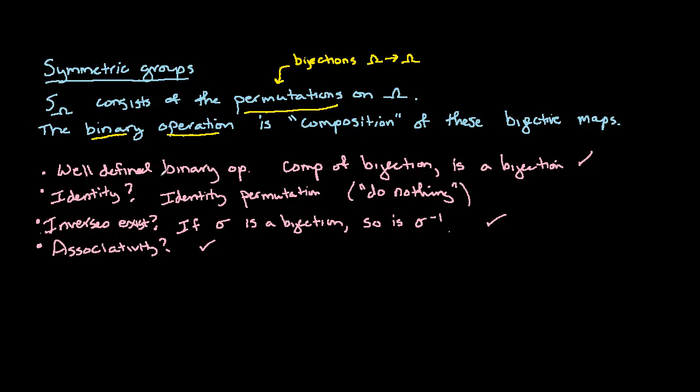Let's take a look at two elements. It will be in S4. And let's look at sigma, which is a 3 cycle, 1, 2, 4. And let's look at tau, which is a 2 cycle, 2, 3.